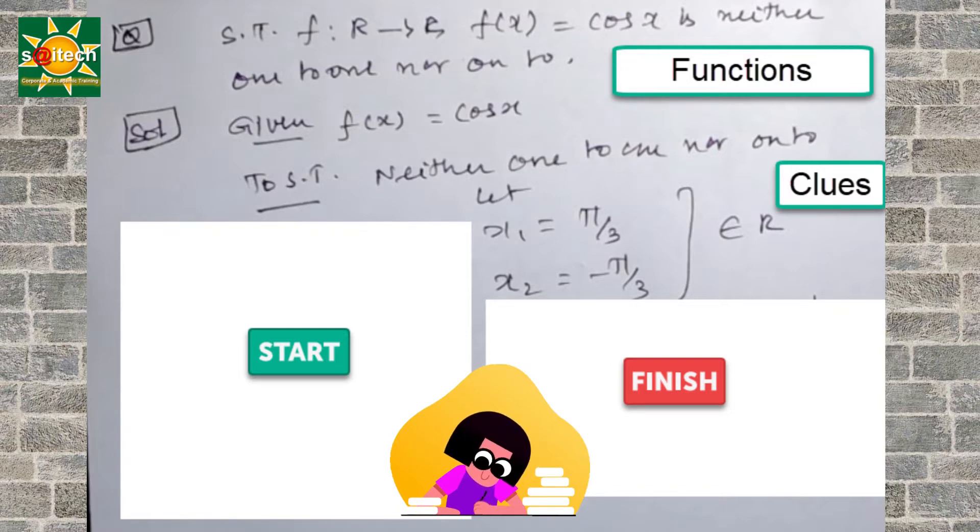And we know f of x1 equals f of x2, means if x1 equals x2, then it indicates it is one-to-one function.